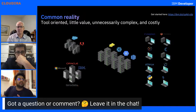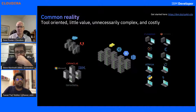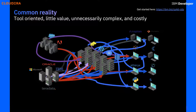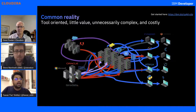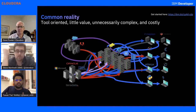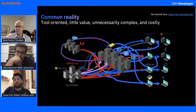Let's talk about the common reality these days. This picture captures the essence of how complex data systems can actually get. There are multiple systems involved, and it's very tool-oriented — very little value, unnecessarily complex and costly. If you want to really visualize things, you really don't know what's going where and how things are happening. That really hinders all the business processes and even adds latency. You have so many things happening at once where you need to decide what to use and where to use it. Individual services do cause a lot of issues within your data science pipeline and also your business.